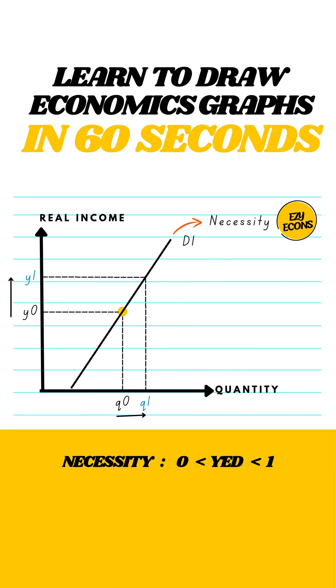Necessities have a YED between 0 and 1. As income rises, demand increases too, but less proportionally. The curve is upward sloping.